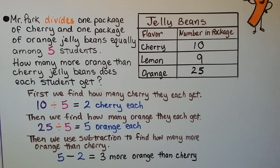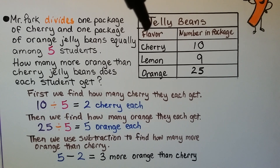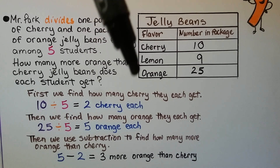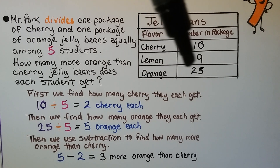Here we have a word problem that's giving us a table with data — information — to help us solve it. Mr. Park divides one package of cherry and one package of orange jelly beans equally among 5 students. How many more orange than cherry jelly beans does each student get? Let's look at this table first. It's a table of jelly beans. We have the flavors: cherry, lemon, and orange. It tells us the number in a package: cherry has 10, lemon has 9, and orange has 25.